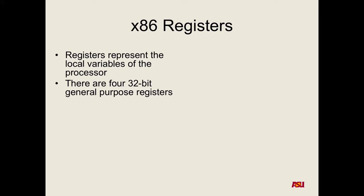On x86 there are four general purpose registers: A, B, C, and D. They look like EAX, EBX, ECX, and EDX. The E stands for extended, and the A/B/C/D is the register name. When you refer to EAX, you're referring to the entire 32 bits inside the EAX register. We're talking about 32-bit architecture, so there are 2 to the 32 memory addresses and the registers are 32 bits as well.